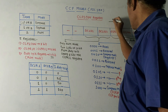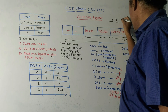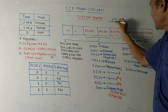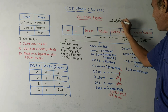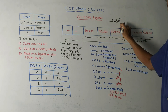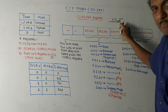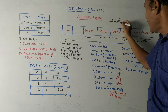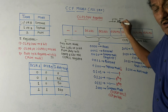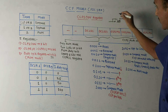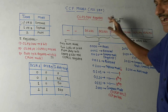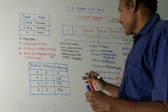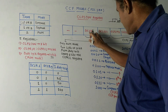The duty cycle is understood through a square wave: if the period of the on-pulse and off-pulse is the same, it is called 50% duty cycle. If the on-pulse is 75% and off-pulse is 25%, the duty cycle will be 75%, and so on — the duty cycle is decided accordingly.